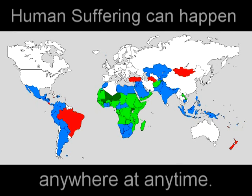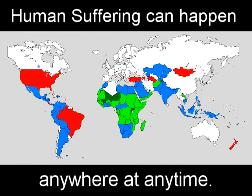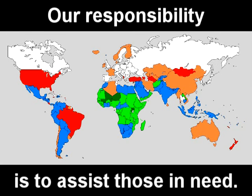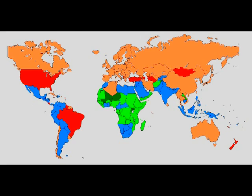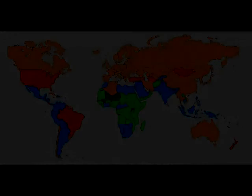Natural disasters and wars are no respecter of wealth, or location, or nation. They will strike the wealthy and the poor. What is important is that we, as a human race, help each other when these events occur.